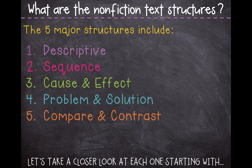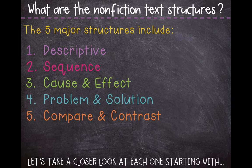So here are the five different types of nonfiction text structures: descriptive, sequence, cause and effect, problem and solution, and compare and contrast. Now it's important to remember that an author could just use one of these text structures, or they could use more than one — maybe two or three of them in their book. We're going to look at each one individually so we can get a better idea of what each text structure looks like.